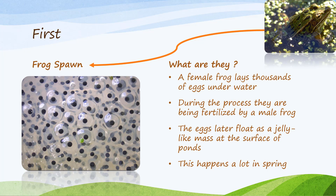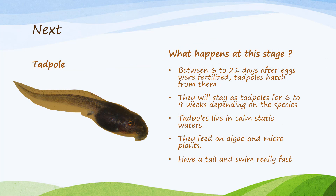This happens a lot in spring. Next: the tadpole. What happens at this stage? Between 6 to 21 days after the eggs are fertilized, tadpoles hatch from them. They will stay as tadpoles for six to nine weeks depending on the species. Tadpoles live in calm, static waters. They feed on algae and micro plants, have a tail, and swim really fast.